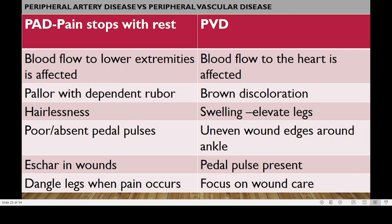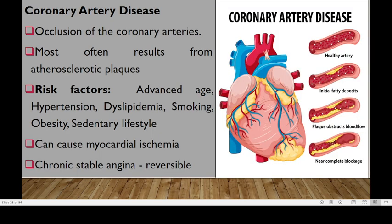Peripheral vascular disease is where blood flow back to the heart is affected in the extremities. There will be brown discoloration and swelling, so you have to elevate the limbs. There will be uneven wound edges around the ankle, especially in the fifth stage of development. Pedal pulse will be present, and you need to focus on wound care, which normally occurs in the fifth stage.